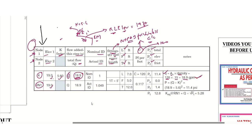The nominal ID of the pipe is 1 inch. The actual ID is 1.049 inches for black steel pipe. You can find this from any manufacturer data or NFPA 13 also mentions this.